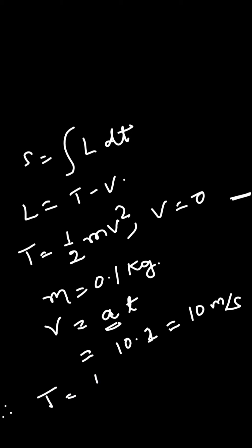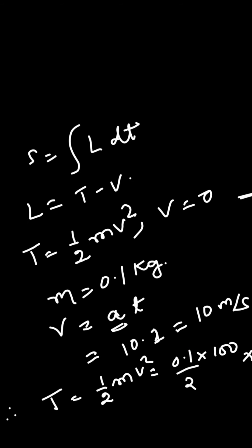Therefore, kinetic energy equals half mv squared. When we put the values, it will be equal to 5 joules. So the Lagrangian is equal to 5.